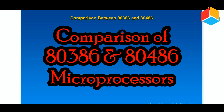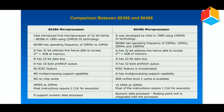Comparison of 80386 and 80486 microprocessors. Intel introduced the first microprocessor of the 32-bit family, the 80386, in 1985 using CHMOS3 technology. The 80486 was developed by Intel in 1989 using CHMOS4 technology.